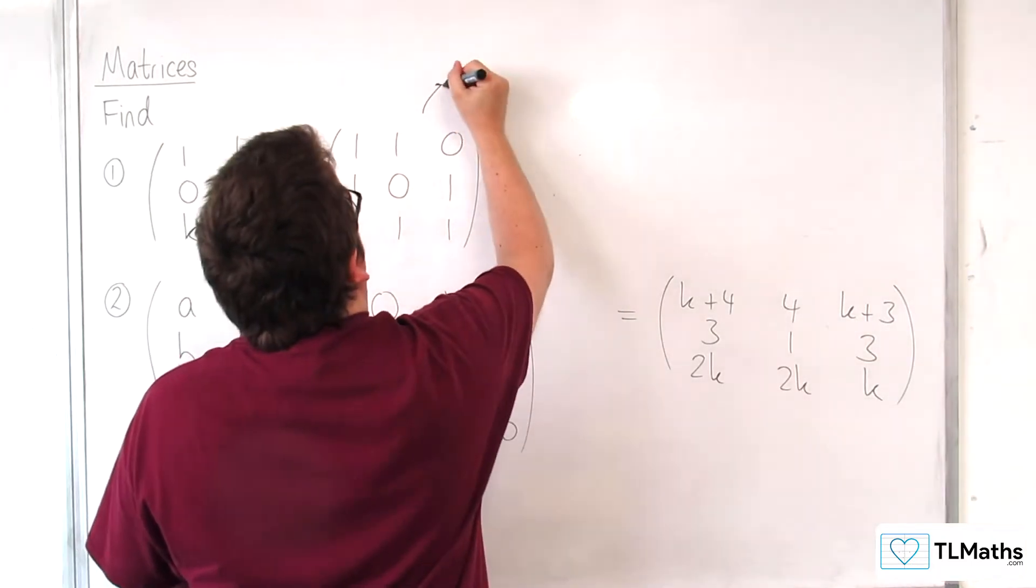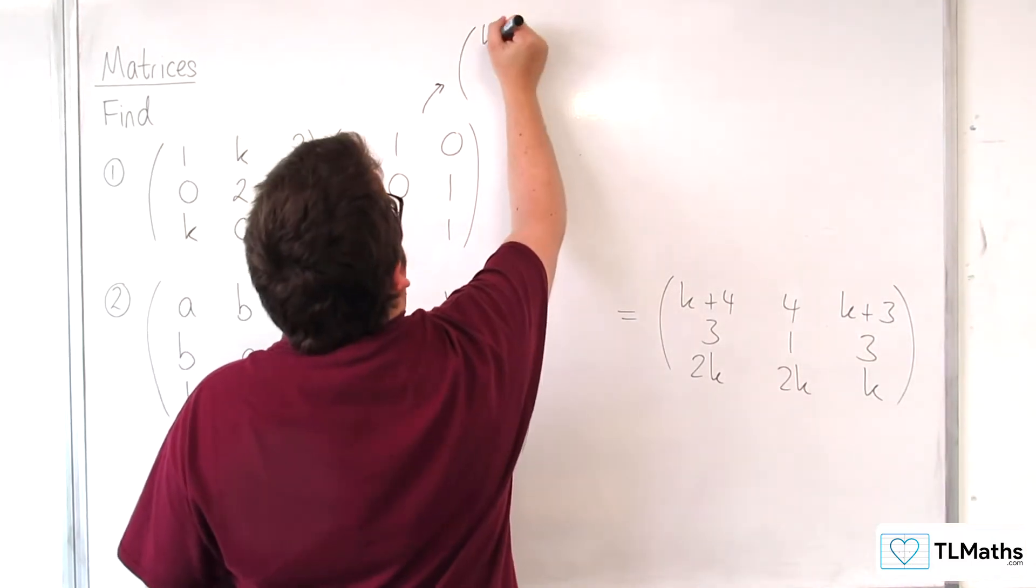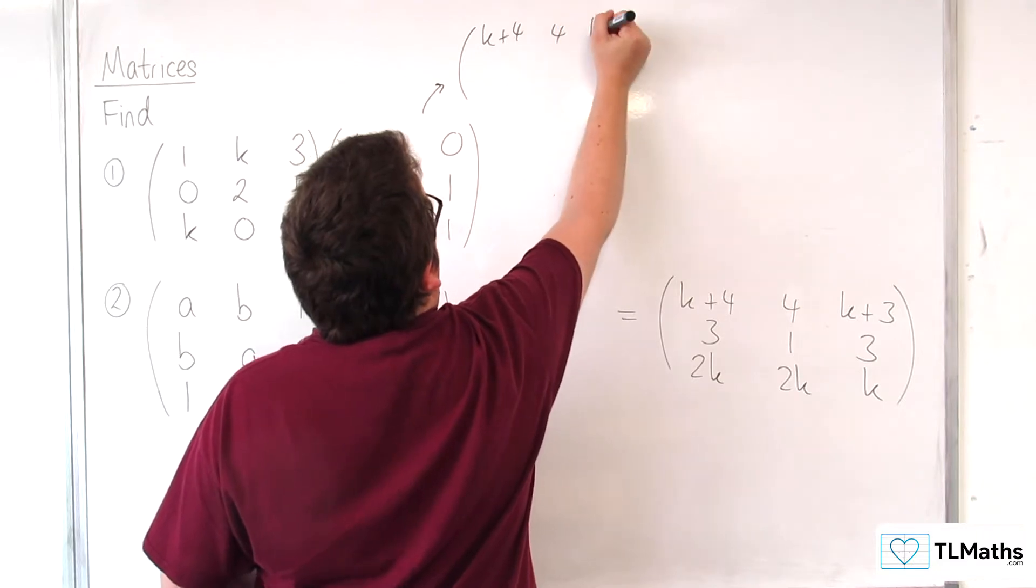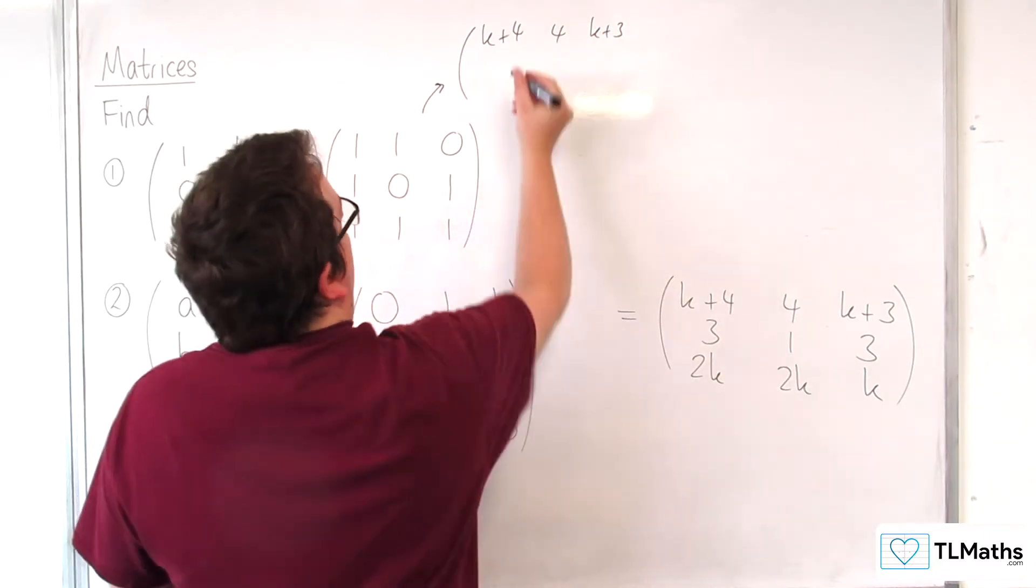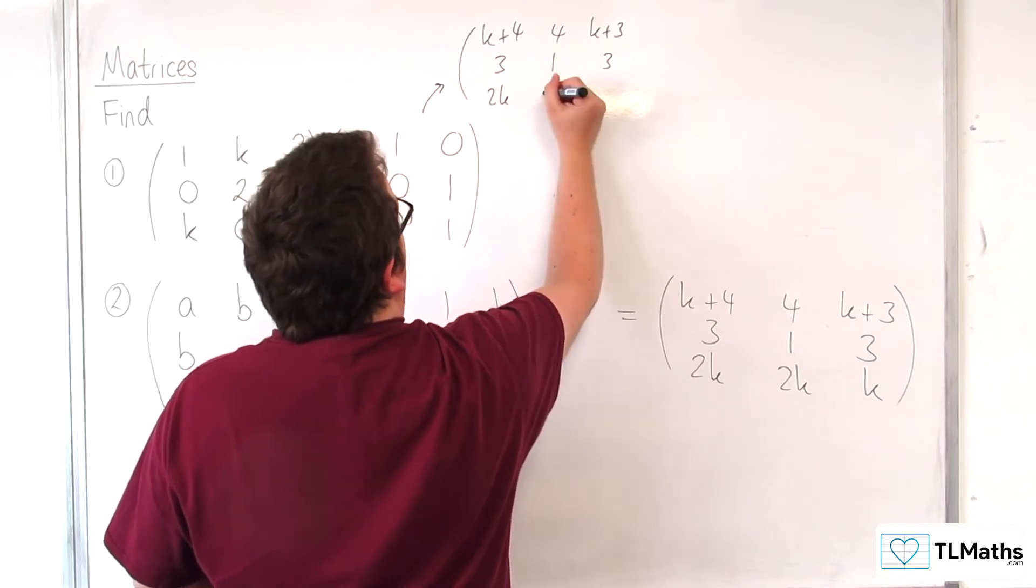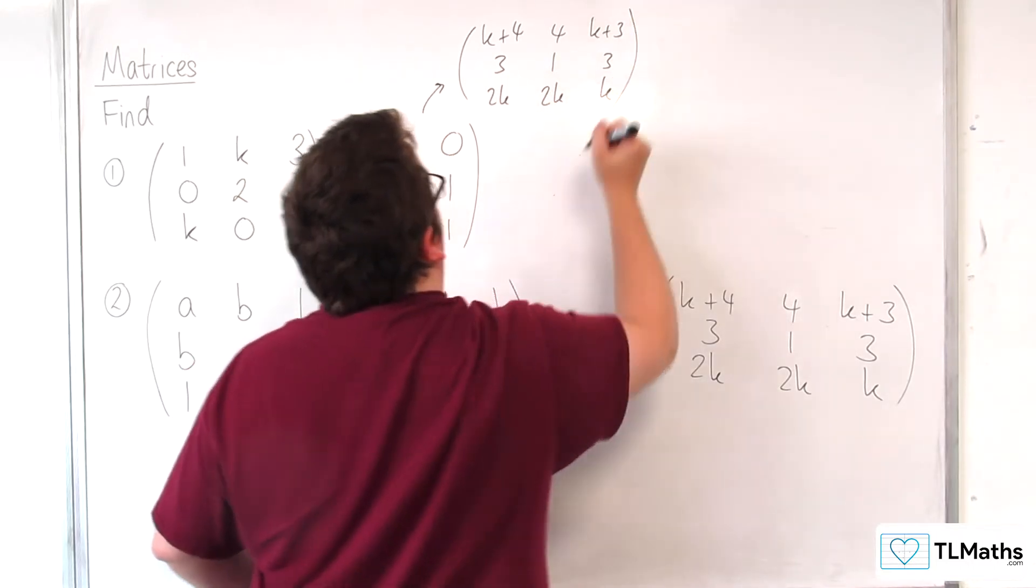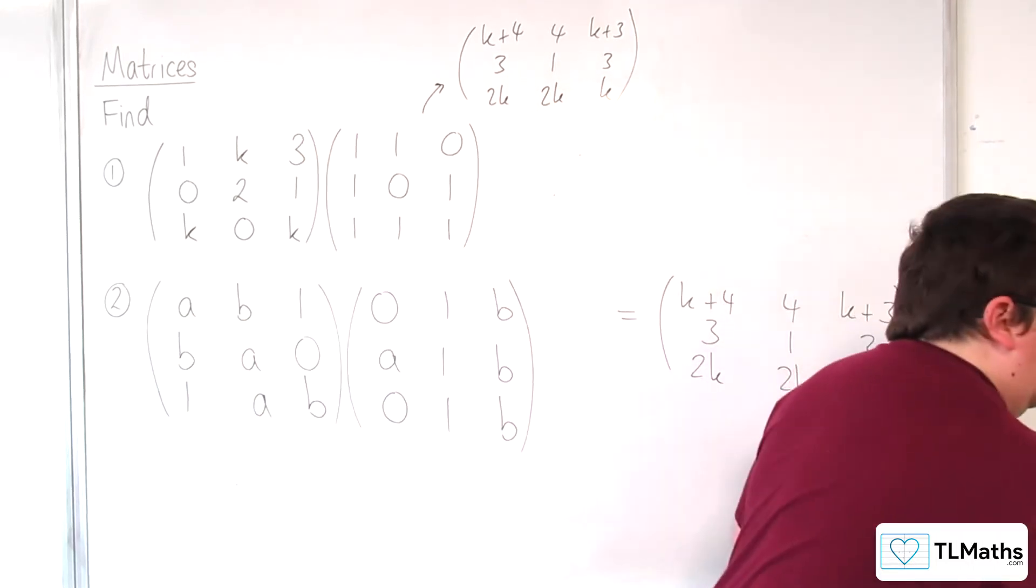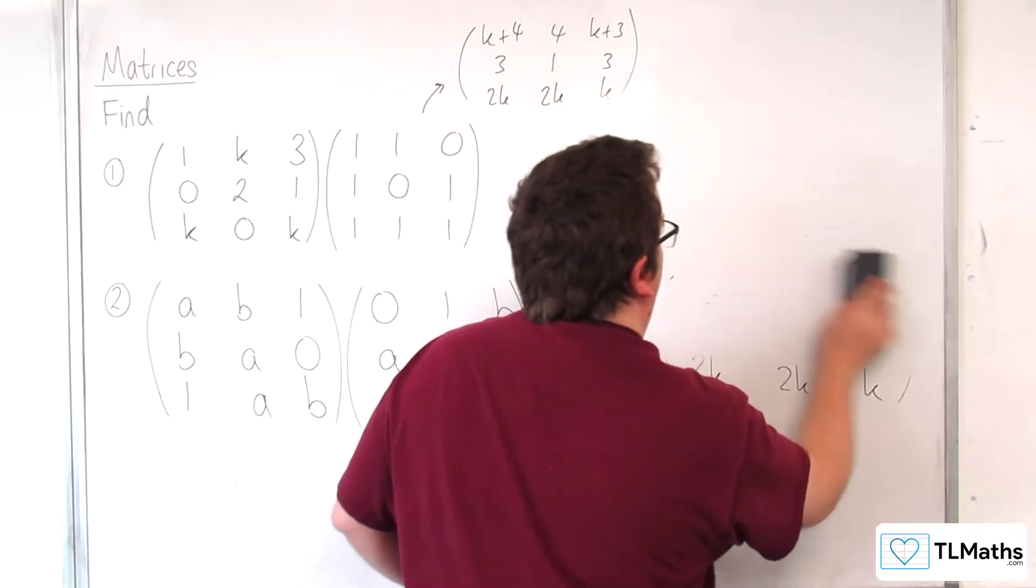Let me just write that one up here. So k plus 4, 4, k plus 3, 3, 1, 3, 2k, 2k. So that's the answer to the first one.